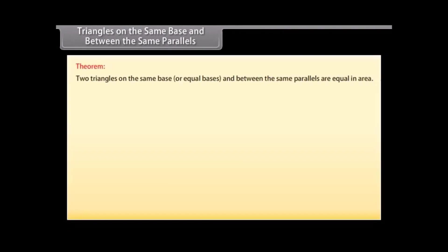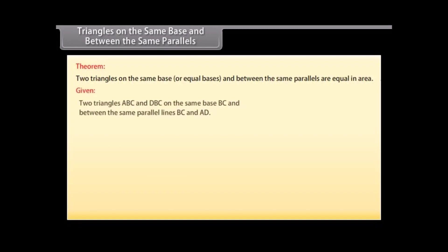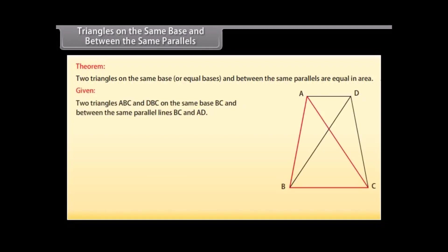Theorem: Triangles on the same base or equal bases and between the same parallels are equal in area. Given: Triangles ABC and DBC on the same base BC and between the same parallel lines BC and AD. To prove: area of triangle ABC is equal to area of triangle DBC.